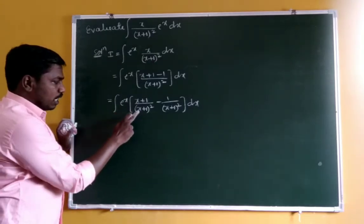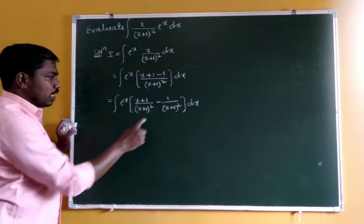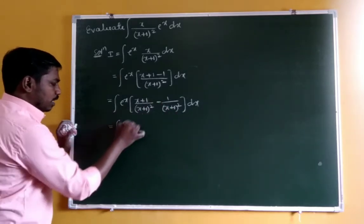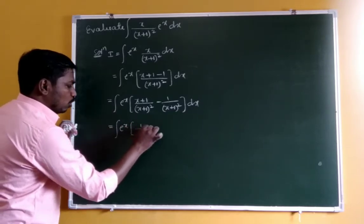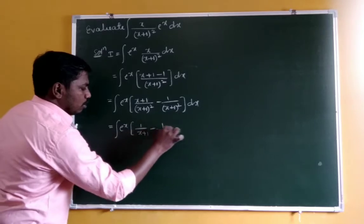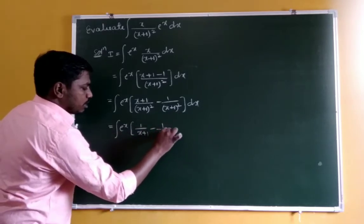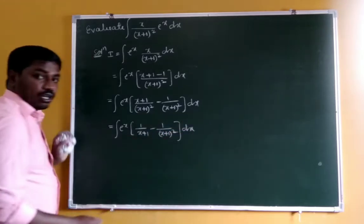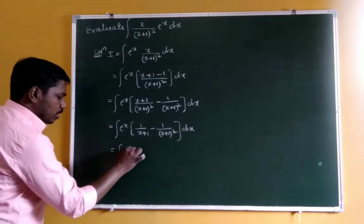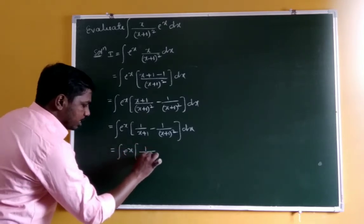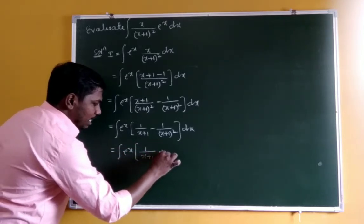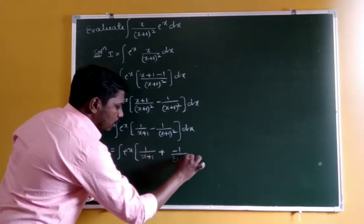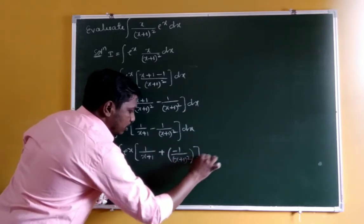Here (x+1) appears 1 time in the numerator and 2 times in the denominator. So 1 term cancels, giving 1 divided by (x+1)². So we have integration of eˣ into [1/(x+1)] minus [1/(x+1)²] into dx.